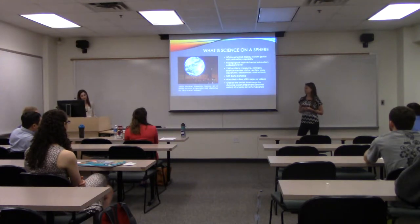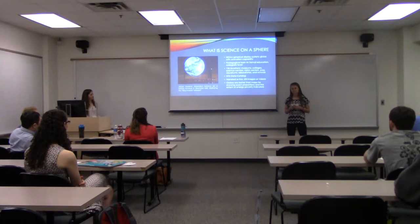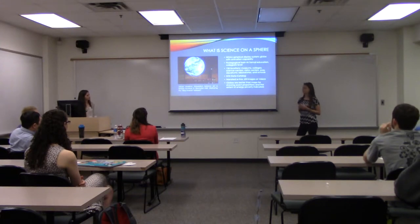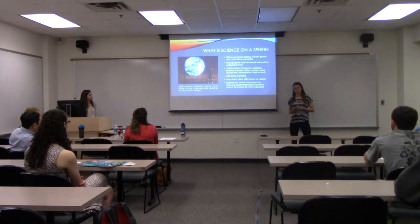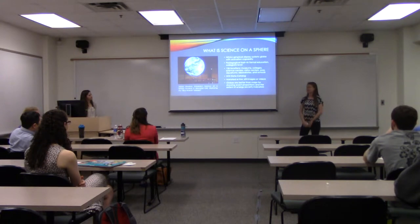For the purposes of this project, we chose to use Science on a Sphere rather than traditional maps to present our data because energy poverty is a global problem. Globes are better than maps for showing the exact proportions and the extent of the energy poverty indicators. For example, with energy poverty most prevalent in Sub-Saharan Africa, when people see an indicator on a globe, one of the first things they notice is how huge Africa is — it really highlights the severity of the problem.